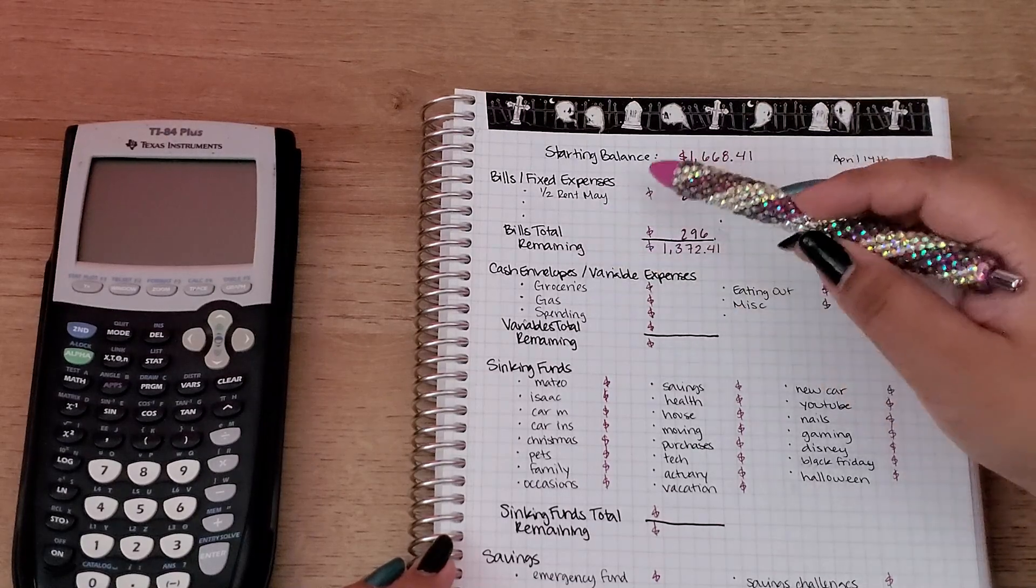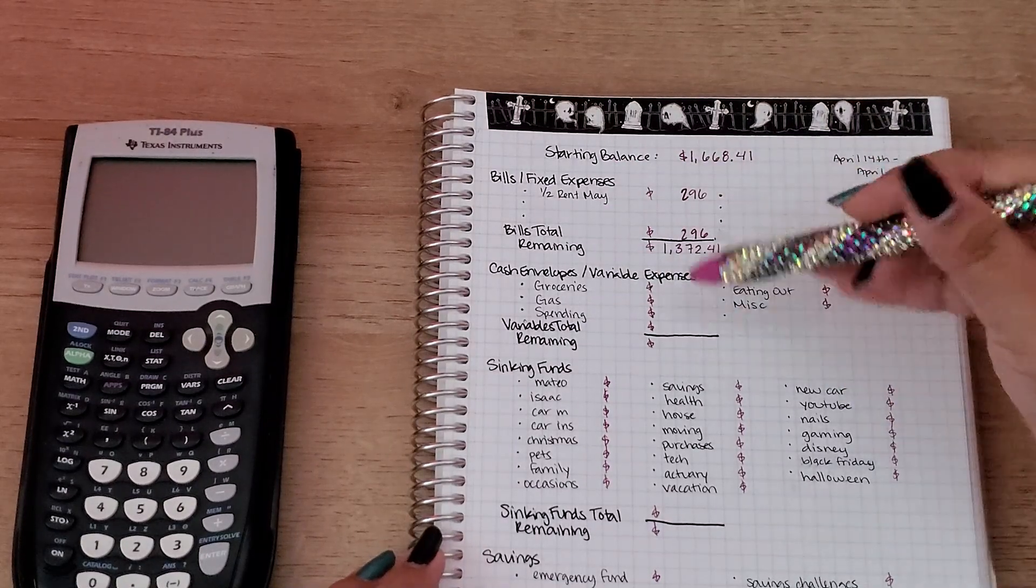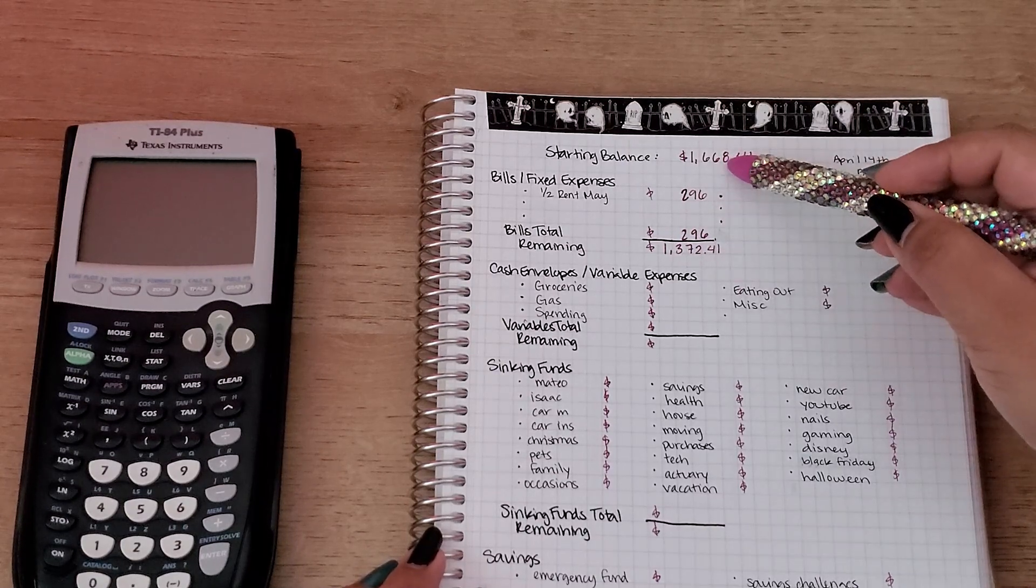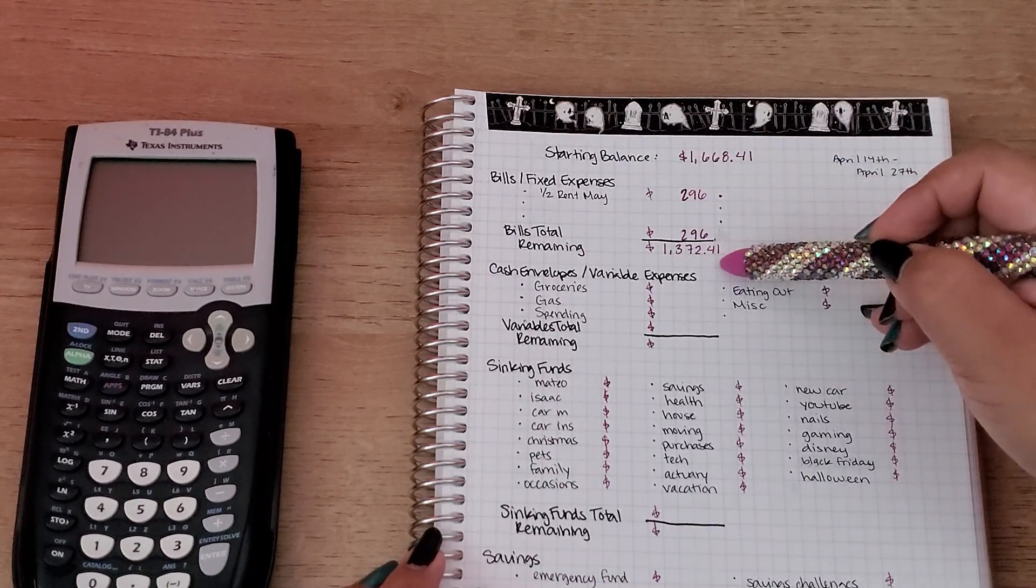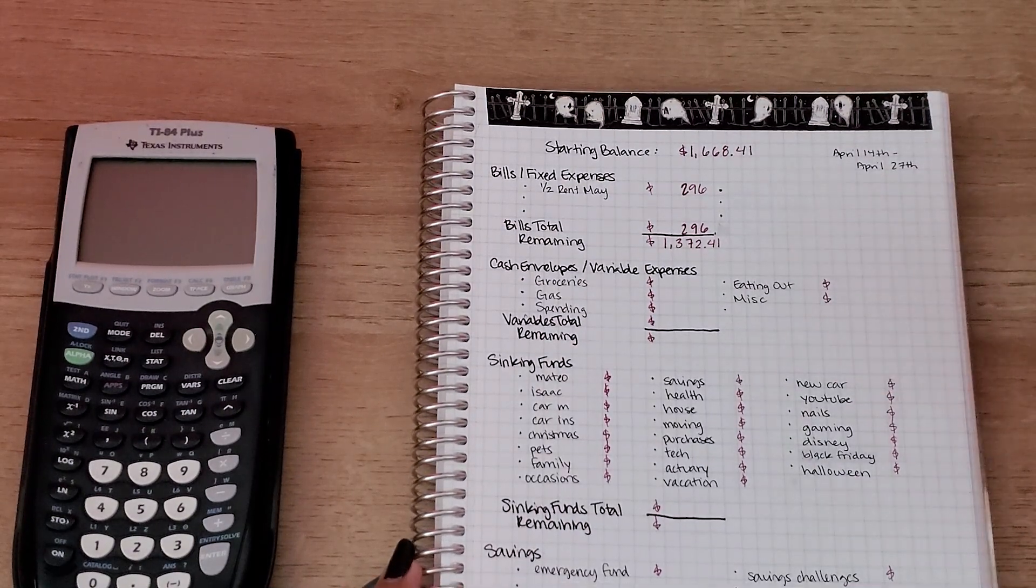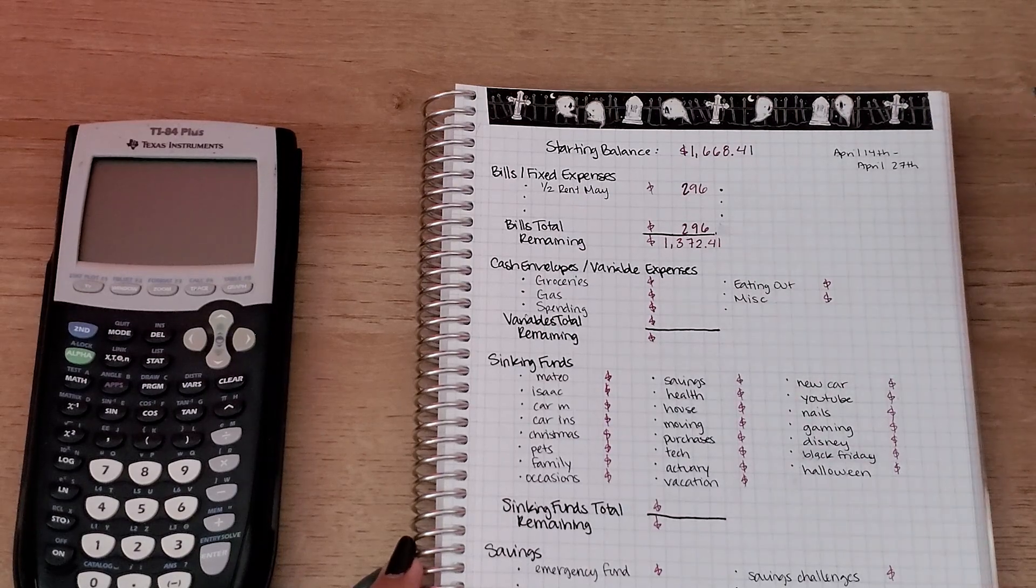So that means my total fixed expenses for this pay period is $296. If I subtract it from the starting balance, I'm left with $1,372.41. And now we're going to go into variable expenses or my cash envelopes.